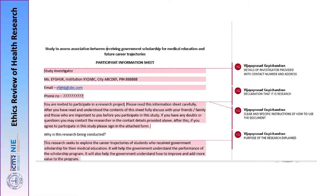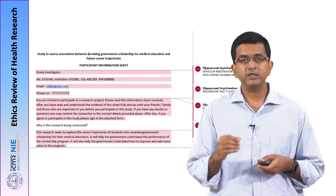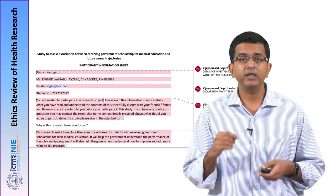The researcher has provided a very clear and easy-to-understand statement of the purpose of the study: 'This research seeks to explore the career trajectories of students who received government scholarship for their medical education.' Very clearly they explain it is trying to understand career pathways medical students take, that it will help the government understand the performance of their scholarship, and that it will help the government improve the scholarship program. So there is good clarity about the purpose of the study.